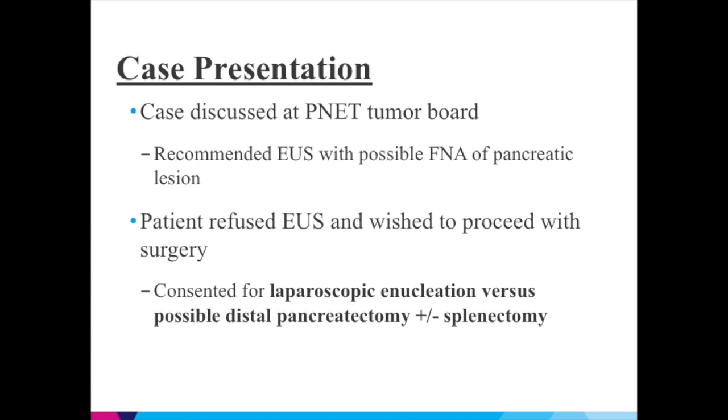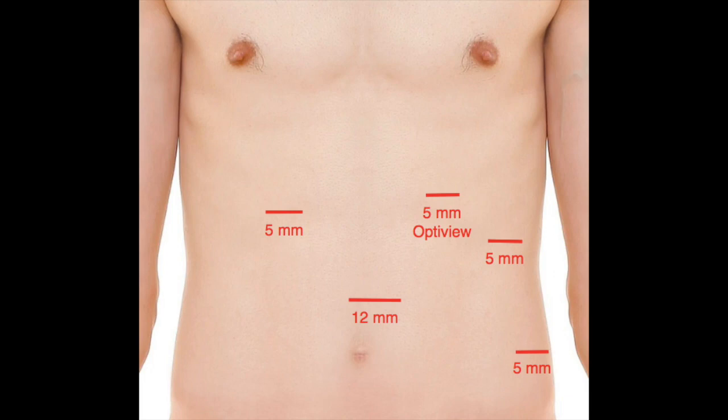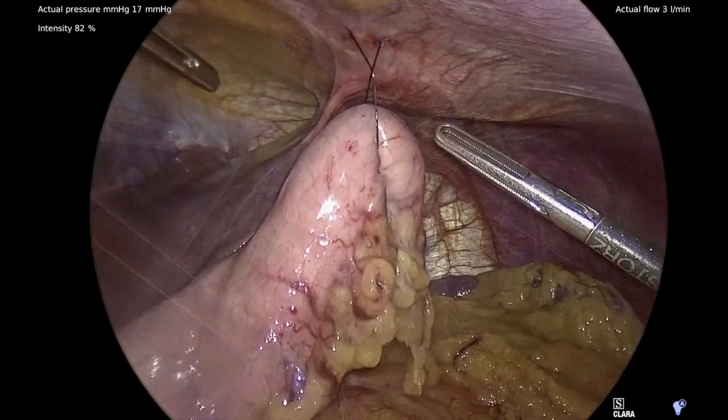Initial access was gained with a 5 mm optical viewing trocar in the left upper quadrant. Additional ports were placed under direct visualization. A general sweep of the abdomen was performed and the gastrocolic ligament was divided with bipolar shears. A transabdominal silk suture is utilized to retract the stomach out of the field of dissection.